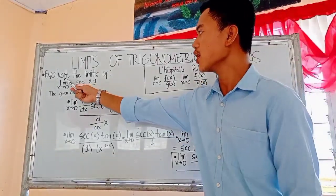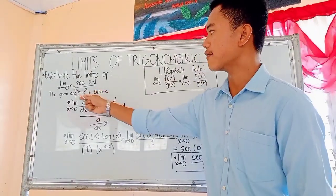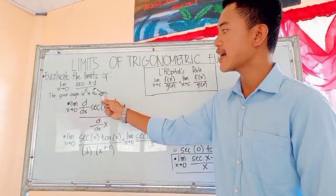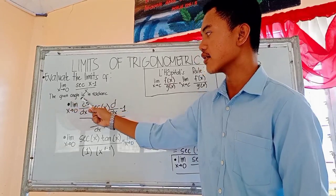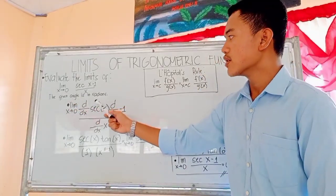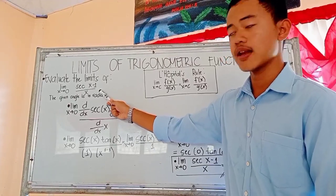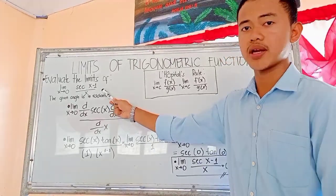So here, we need to evaluate the limits of secant of x minus 1 all over x as x approaches to 0. The given angle is in radians. So in evaluating this limit, the numerator and the denominator will lead to indeterminate form.